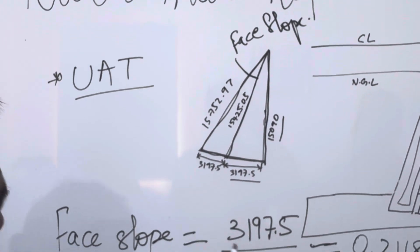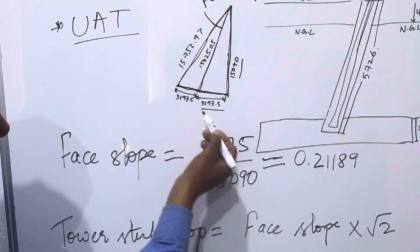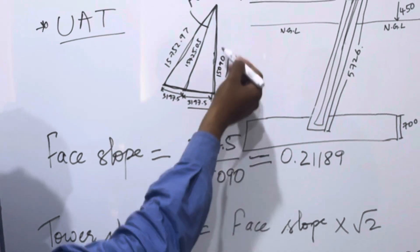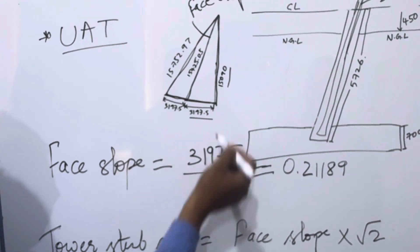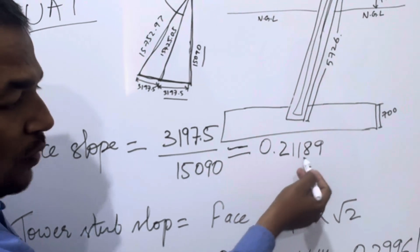So from this what we have to do, base of slope 3197.5 this is the base. This base divided by the height of 1 meter 1.090 so you will get 0.21189.